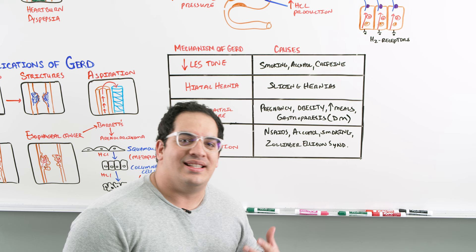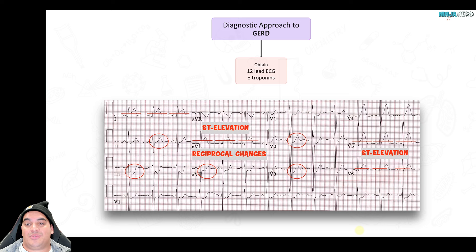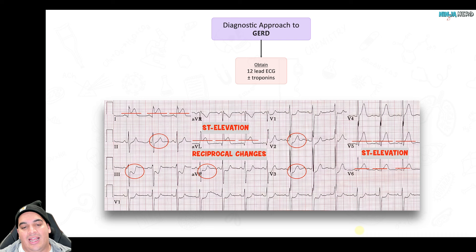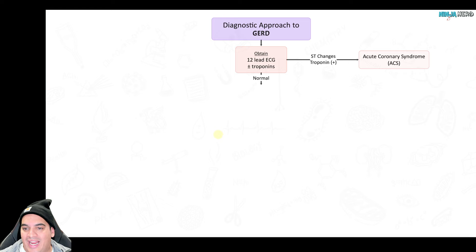Now let's look at the diagnostic approach. GERD is generally a clinical diagnosis. Heartburn can sometimes present like chest pain, so you should always obtain an ECG and — depending on results — get troponins to rule out an inferior MI. If you see ST elevation, reciprocal changes, and positive troponins, this is not GERD; this is potentially acute coronary syndrome.